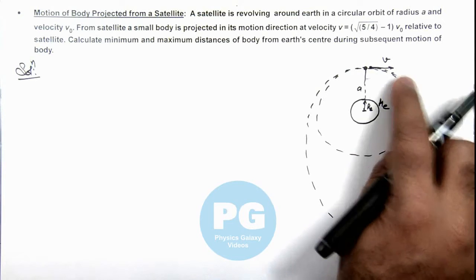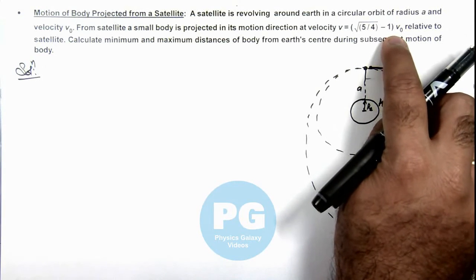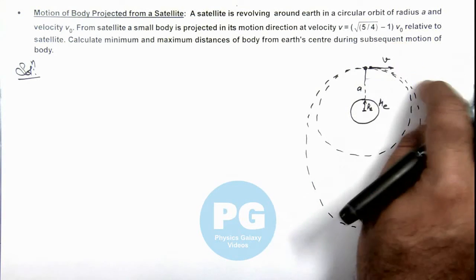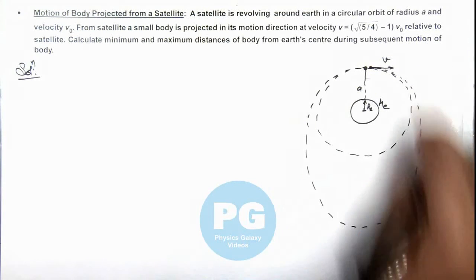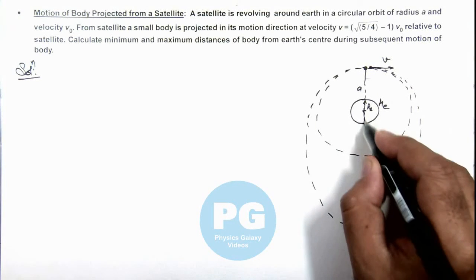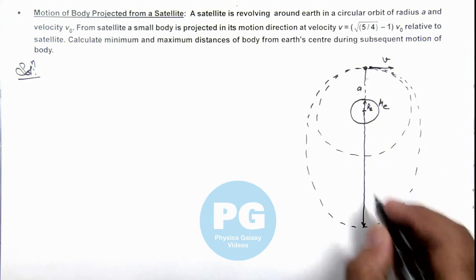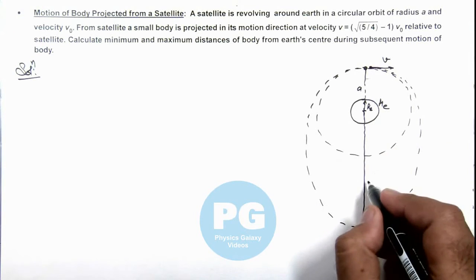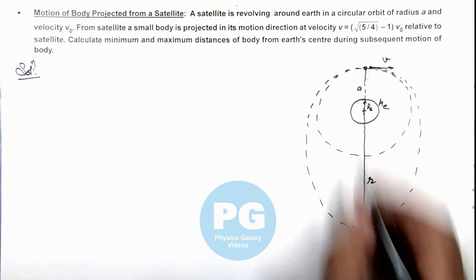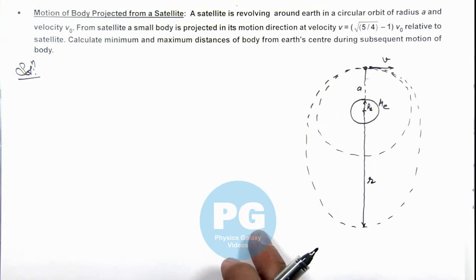As the velocity is less than √2 times v₀, the body won't escape, so it will follow an elliptical trajectory where its farthest distance from the Earth's center is say r₁, which we can calculate by using conservation of energy and angular momentum.